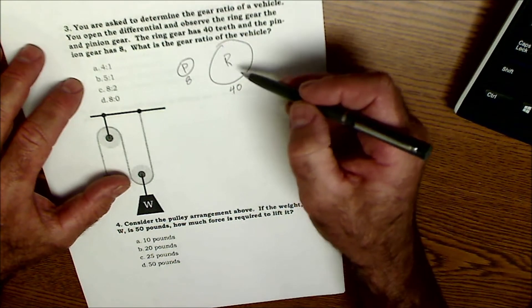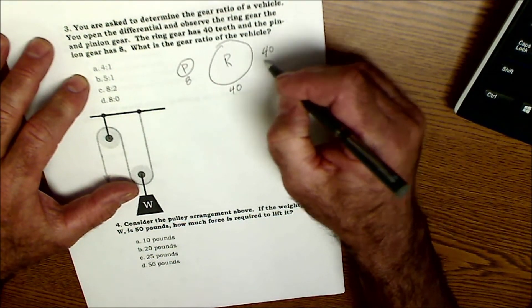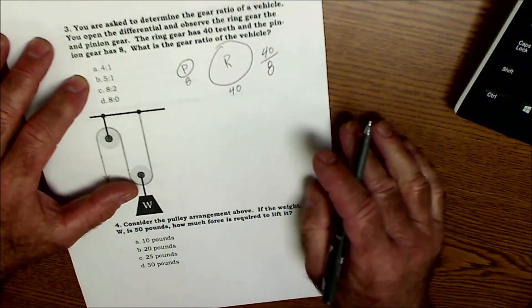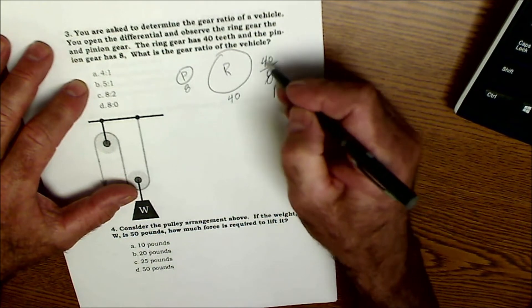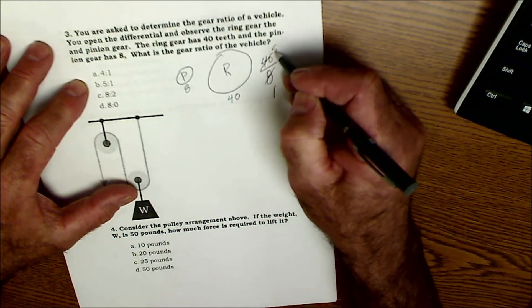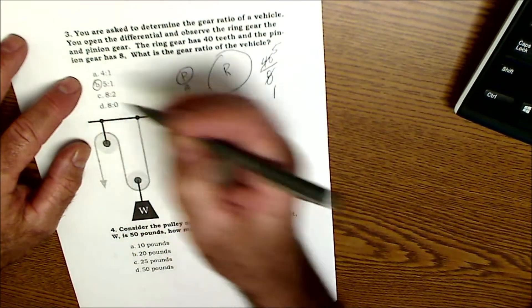What's the gear ratio? Well, the gear ratio is going to be one to the other or the ring to the pinion. It's going to be 40 teeth to eight teeth. And then I know that eight goes into eight one time. Eight goes into 40 five times, which is going to be a ratio of five to one, which is right there.